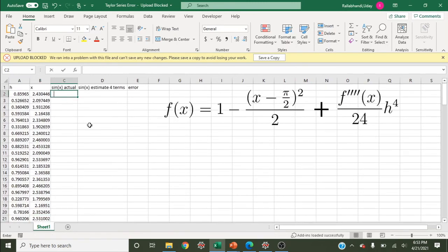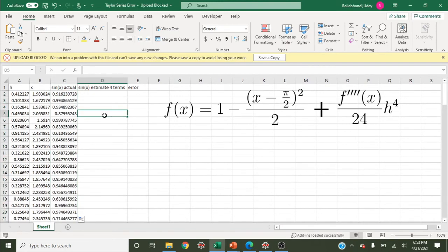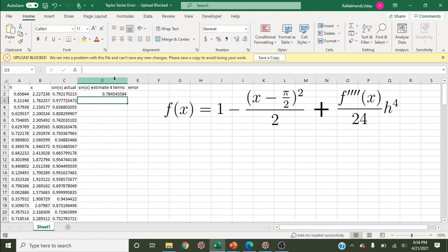Now our actual sine of x here is going to be sine of x. We'll use Excel's built-in function. And Excel's built-in function probably does the Taylor series too, out to a certain amount of terms, but probably more than four. Our estimate here is going to be this estimate right here on the right. So it's one minus x, which is this value here, minus pi over two, to the two divided by two. So that's our estimate.